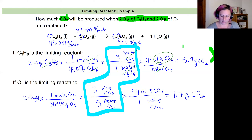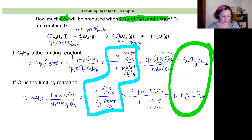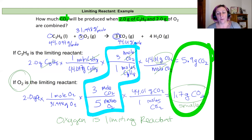Comparing the two results: 5.9 grams of CO2 if all the propane reacts versus 1.7 grams of CO2 if all the oxygen reacts. Because 1.7 is smaller, oxygen is the limiting reactant. When this reaction is carried out, 1.7 grams of carbon dioxide will be produced, and there will still be some propane left over in the reaction mixture, but no molecular oxygen will remain.